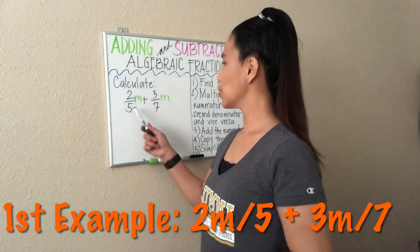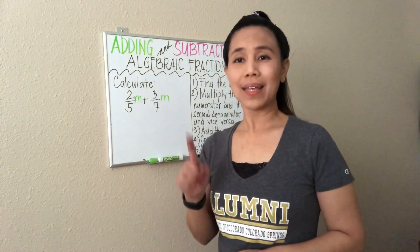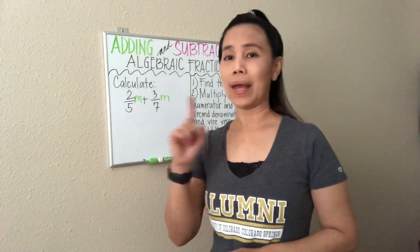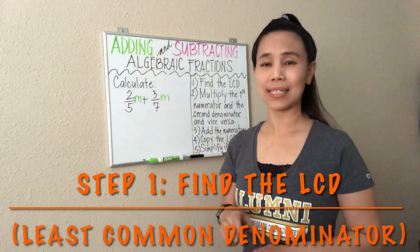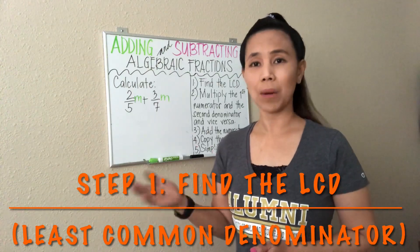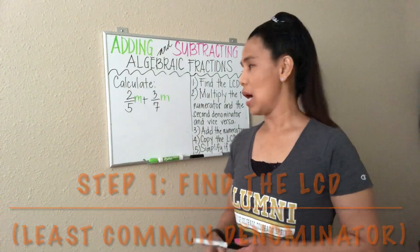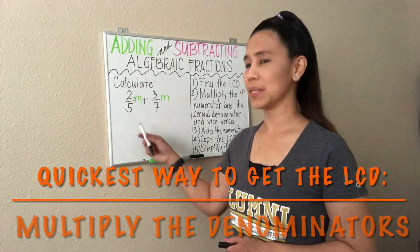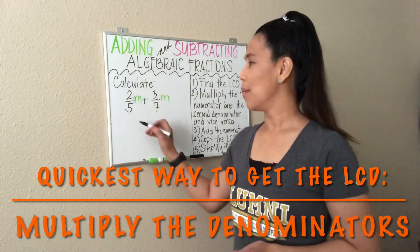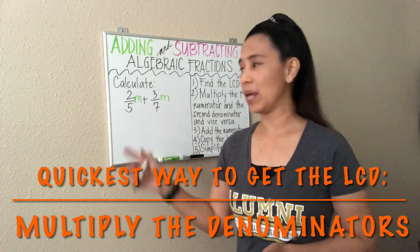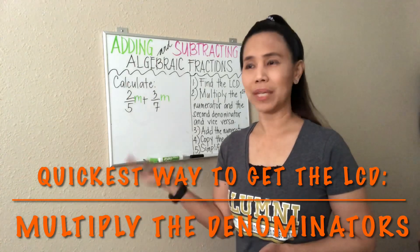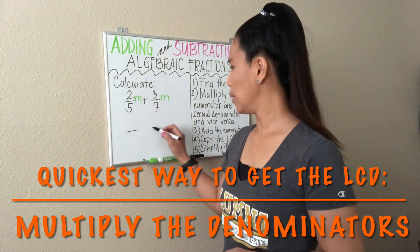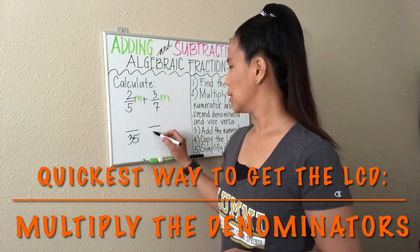To start with, let's calculate 2/5 M plus 3/7 M. First thing, we have to ensure that they will have the same denominator. That's why our first step is to find the LCD — the least common denominator for both fractions. The quickest way is to multiply both denominators. 5 times 7 will be 35. That is always true, especially when you have small numbers, but if you have big numbers, you can have another strategy. So we will use 35 as the LCD.